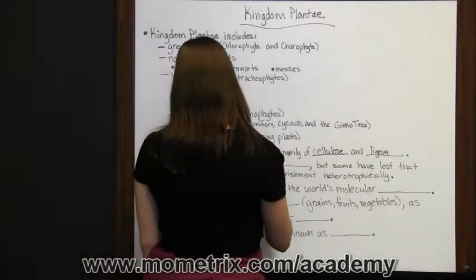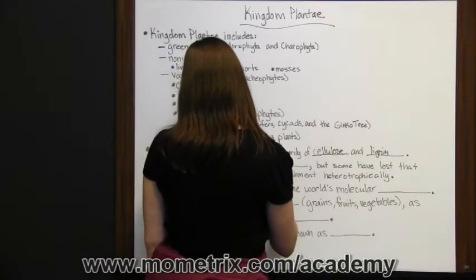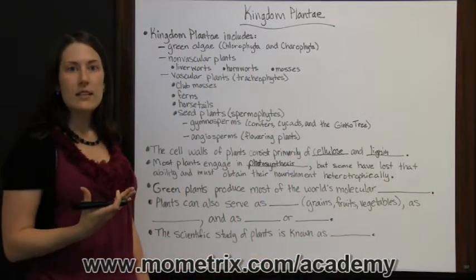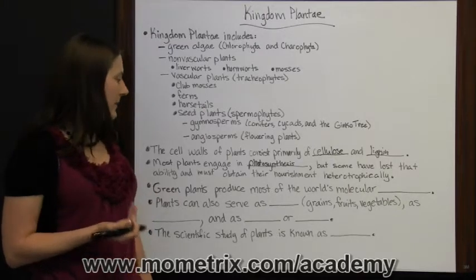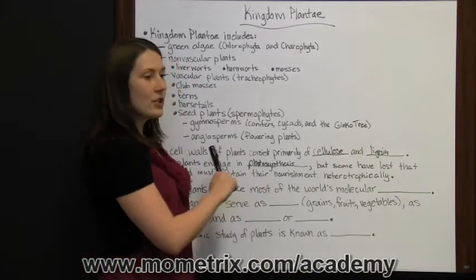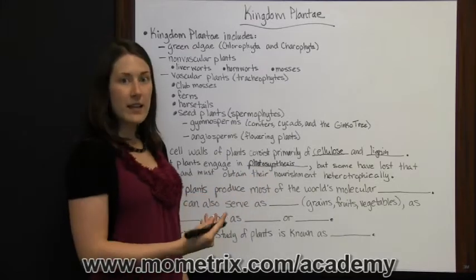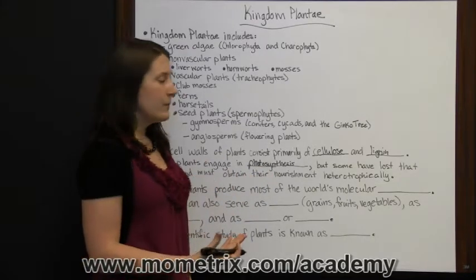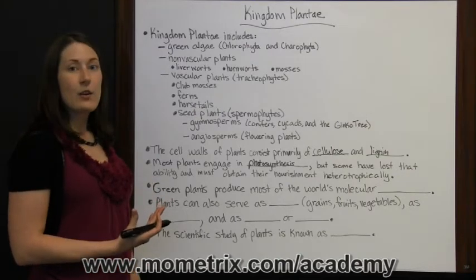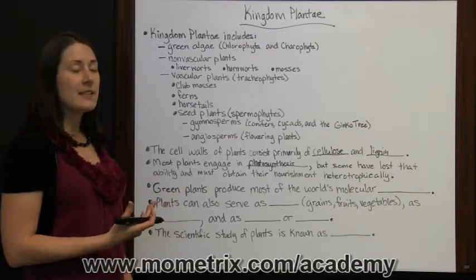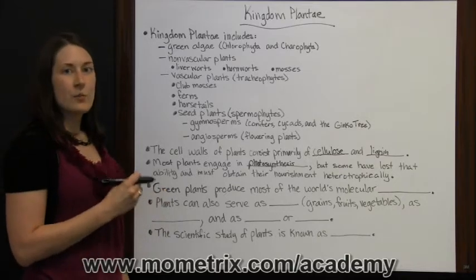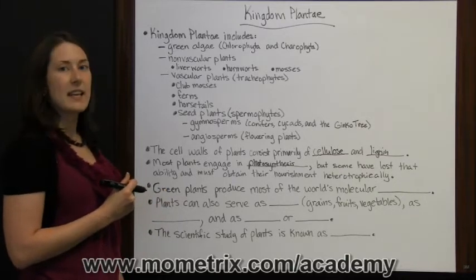Most plants engage in photosynthesis, where plants take in energy from the sun and use it to carry out their own processes. But some plants have lost that ability and must obtain their nourishment heterotrophically — they can't make their own food. Autotrophs, such as plants that carry out photosynthesis, can create their own food, while heterotrophs cannot and must get their nourishment from other places.